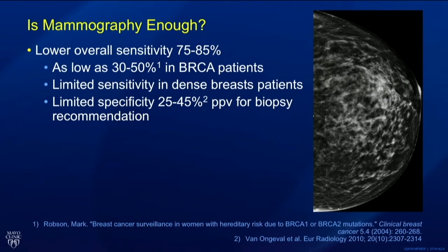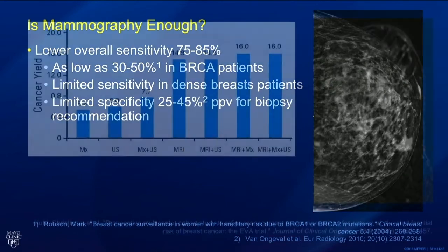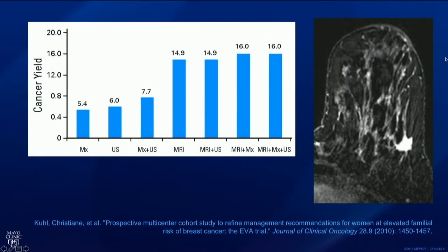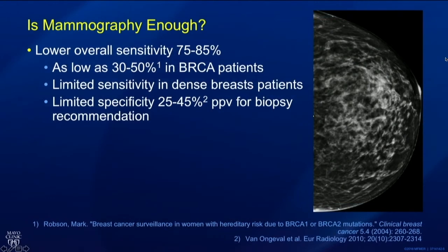So there is a limited sensitivity, and why is that? Well, dense breast tissue, as you can see on this picture, is white. Cancer is white. So it causes what we call a masking effect. Therefore, in these dense-breasted patients, we're not able to see the cancer underlying the dense tissue, hence the limited sensitivity.